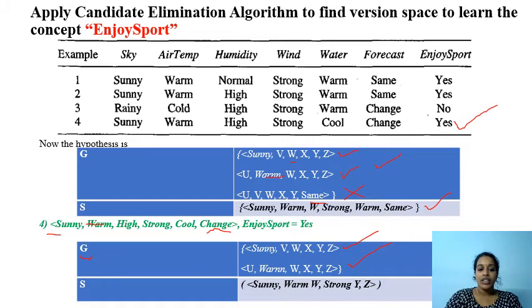Now check this instance with S. Sunny and sunny is okay. Warm and warm is okay. W can accept any value and high is okay. Strong and strong is okay.